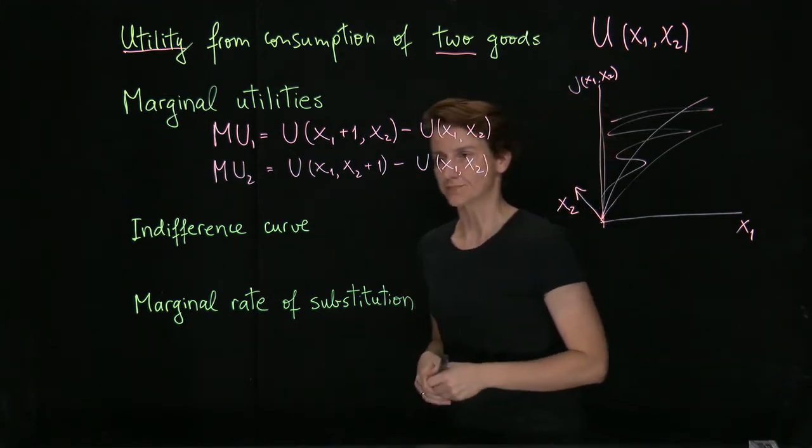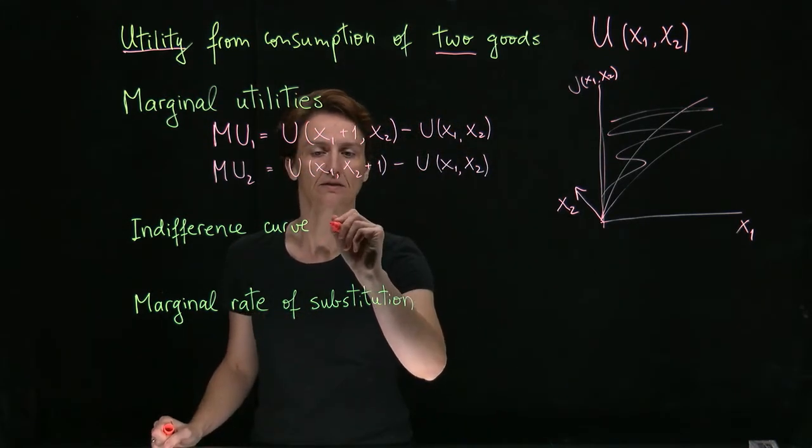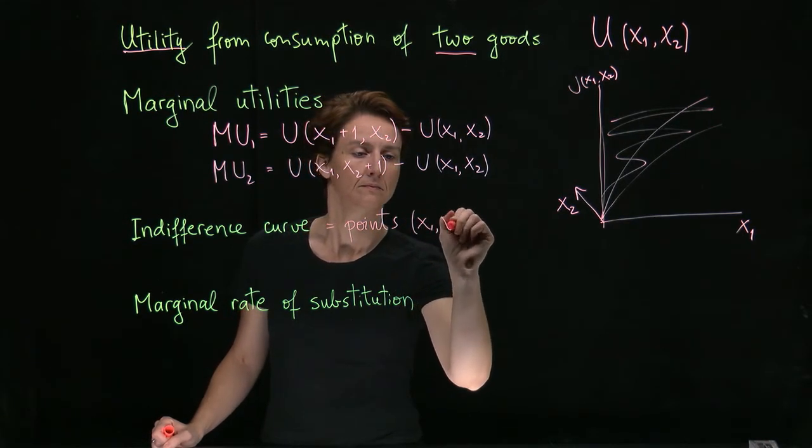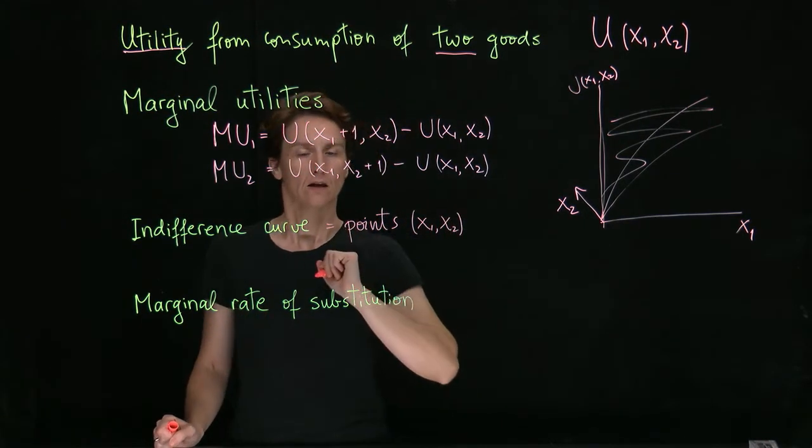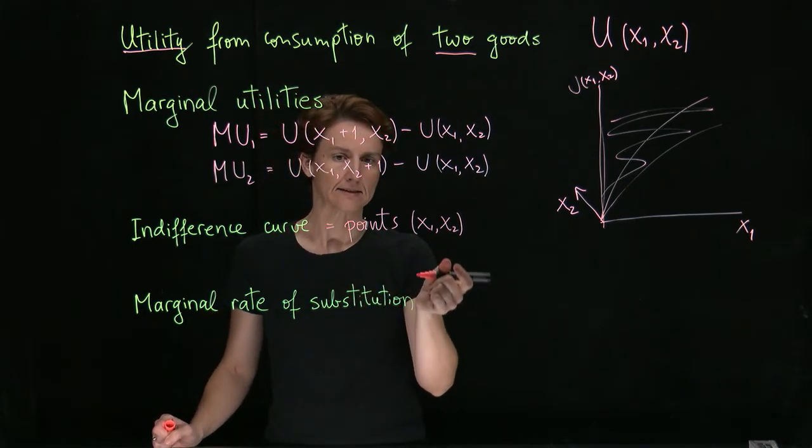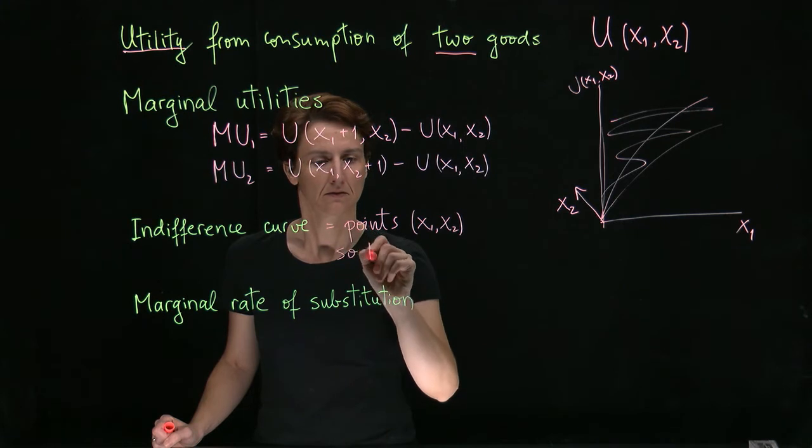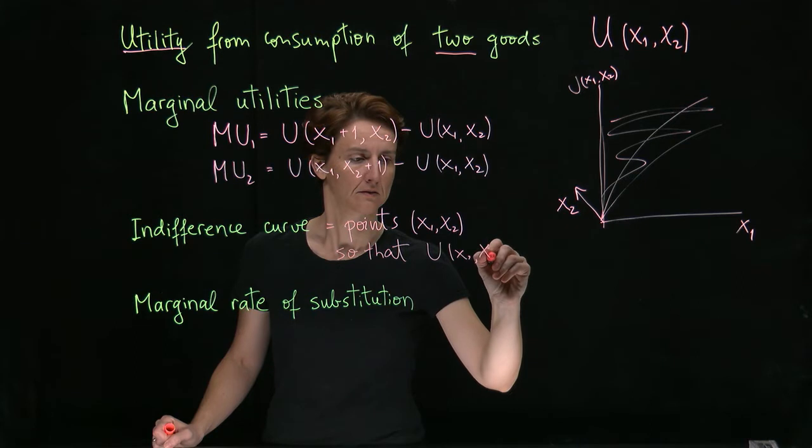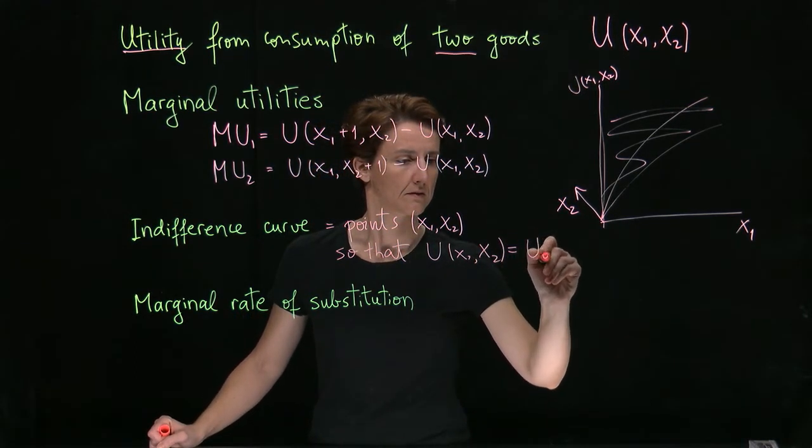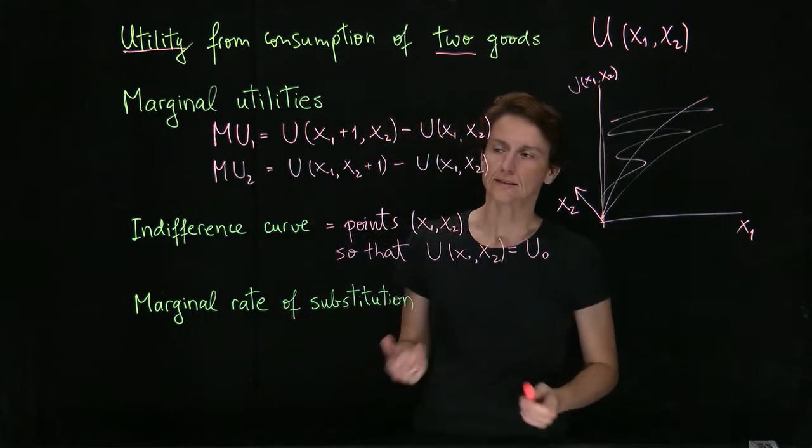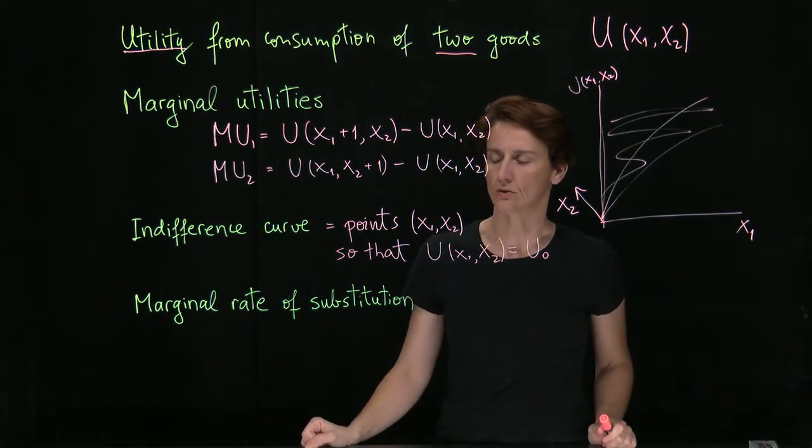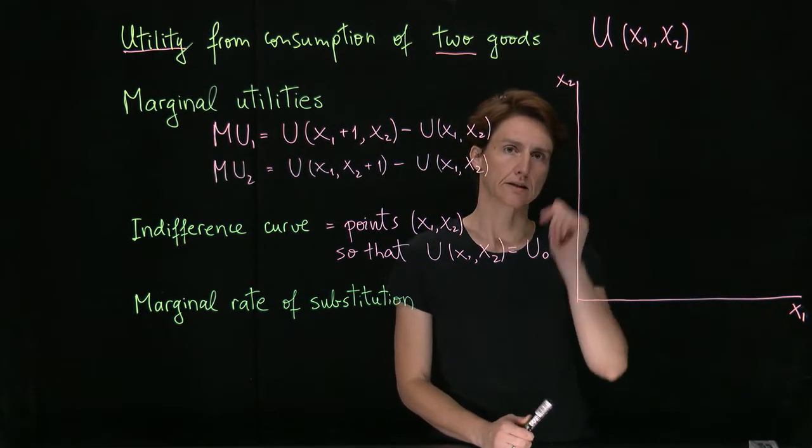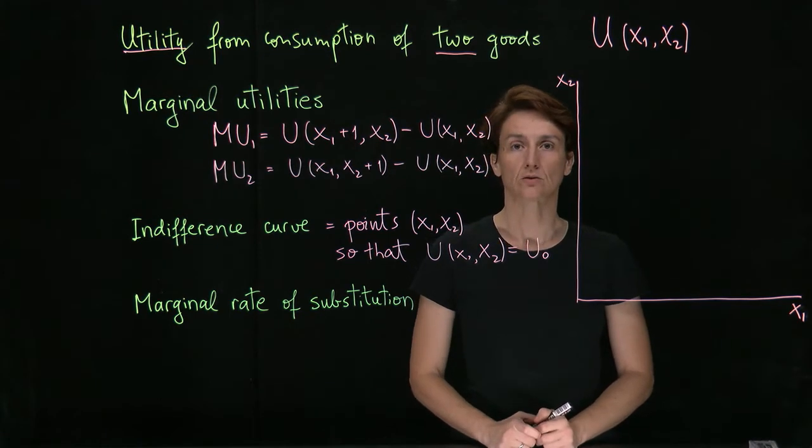So an indifference curve is simply a set of points where the value of utility is fixed at a certain level. So there will be an indifference curve for any value that utility can take. Indifference curves will be shown in the x1, x2 plane. And let's go ahead and try to draw one of them.